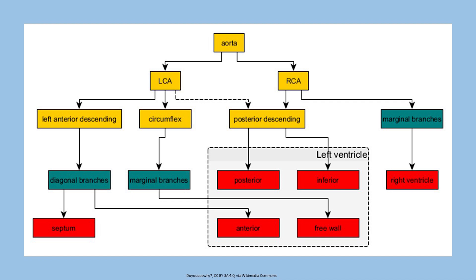From the left sinus of Valsalva, from the aorta, originates the left main artery, labeled here as LCA, which stands for left common coronary artery, as shown on the left side of the diagram. From the left main originates the left anterior descending artery, which gives rise to diagonal branches and septal branches supplying the interventricular septum and the majority of the front wall of the left ventricle.